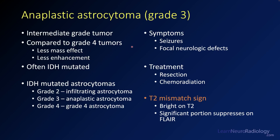Compared to grade 4 tumors, they have less mass effect and less enhancement. Many times these patients present with focal neurologic symptoms or seizures. The treatment, much like other brain tumors, is resection of as much of the tumor as possible, followed by chemoradiation.